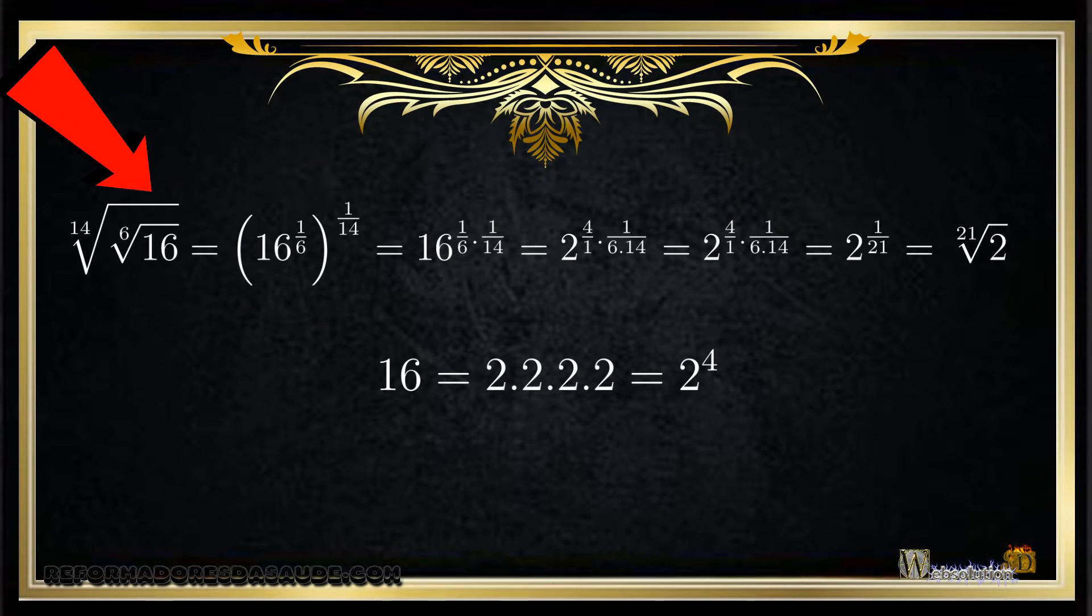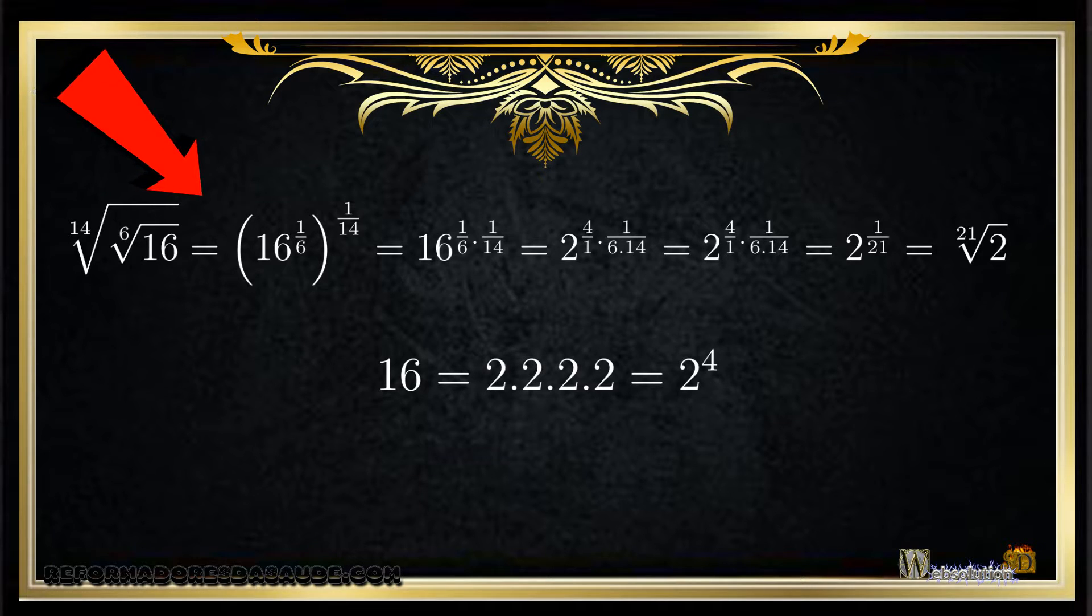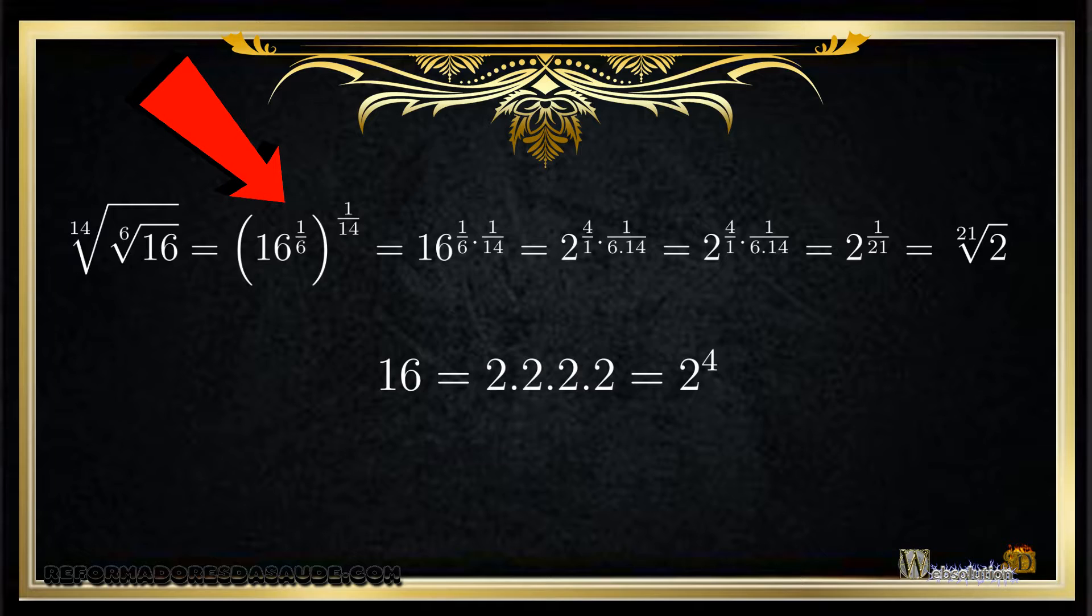Now let's do the exercise in practice. So we have root 14 of the 6th root of 16. Again knowing that root is merely exponential division, we have 16 to the 1 divided by 6, everything to the 1 divided by 14.